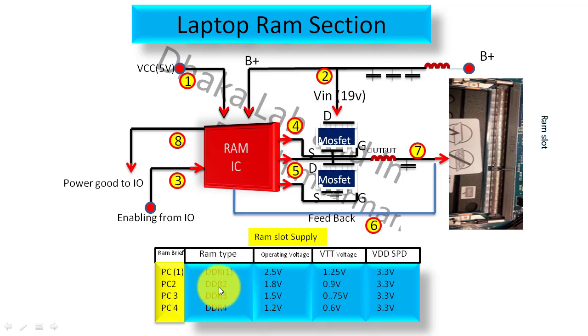For DDR2 RAM, the other type will be PC2. Operating voltage will be 1.8 volt and VTT voltage will be half of that voltage, that's 0.9 volt. VTT-SPD will be the same, 3.3 volt. For DDR3 RAM, PC3 will be the other name. Operating voltage will be 1.5 volt and VTT will be half, that is 0.75 volt, and VTT-SPD will be 3.3 volt.